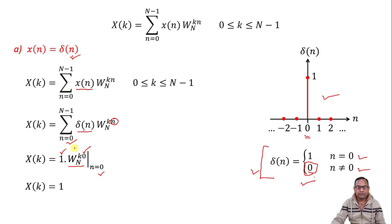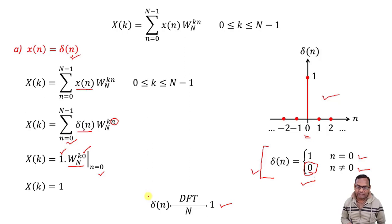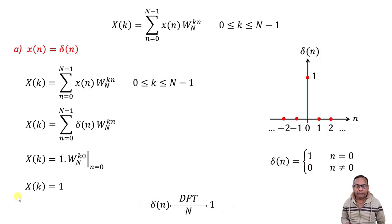So simply X[k] equals 1. This means the DFT of the impulse function is 1. You must always remember this: the DFT of delta[n] is 1, and conversely the IDFT of 1 is delta[n]. The DFT of the impulse function is unity, and the IDFT of unity is delta[n].